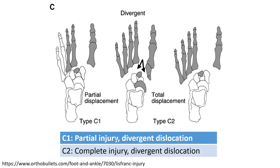TAI-1C shows divergent dislocation. PI-2 represents complete injury with divergent dislocation.